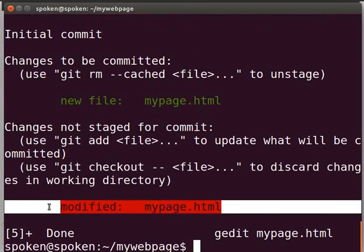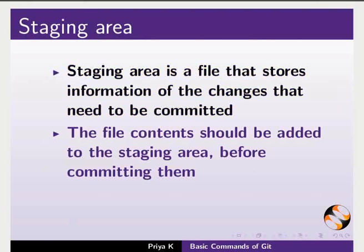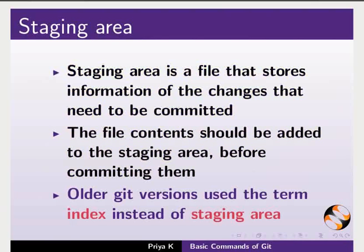Let us switch back to our slides to know more about the staging area. The staging area is a file that stores information of the changes that need to be committed. The file contents should be added to the staging area before committing them. We will discuss more about commit in the upcoming tutorials. Older git versions used the term index instead of staging area.